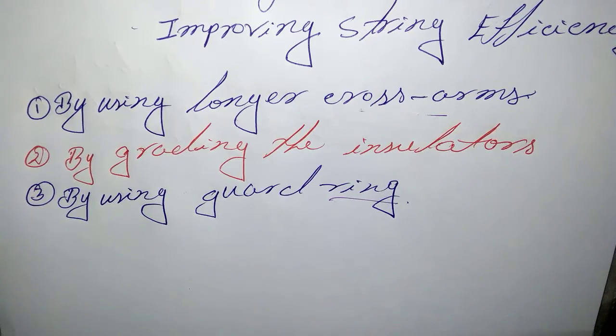K is the ratio of shunt capacitance to mutual capacitance. The lesser the value of K, the greater is the string efficiency and more uniform the voltage distribution. The value of K can be decreased by reducing the shunt capacitance.